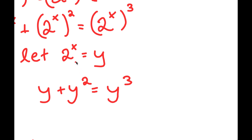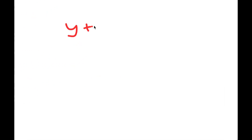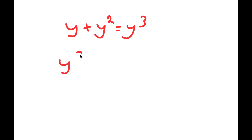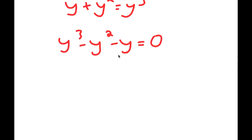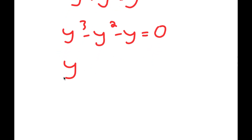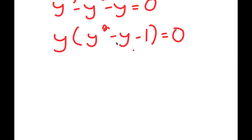So now I have y plus y squared is equal to y to the power of 3. To solve this, I'm going to rewrite this as y cubed minus y squared minus y is equal to 0, and factor out y. So I get y times the quantity y squared minus y minus 1 equals 0.